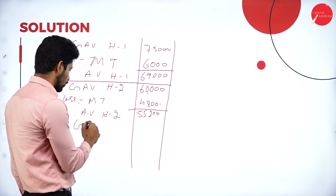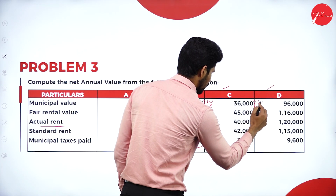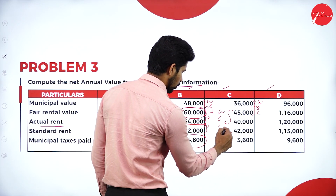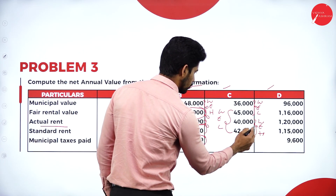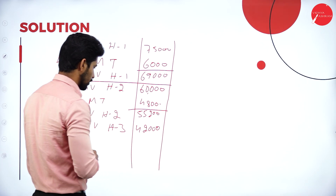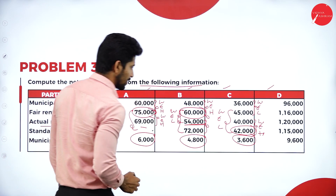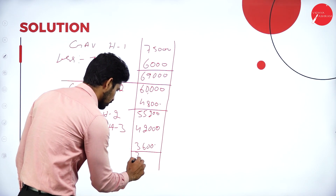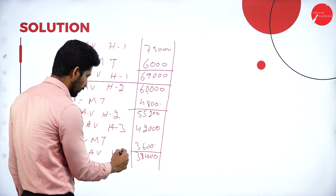For house three: municipal value and fair rent — whichever is high is 45,000. Compare with standard rent of 42,000 — whichever is low is 42,000. Compare with actual rent of 40,000 — whichever is high is 42,000. So gross annual value is 42,000. Less municipal tax of 3,600. Balance is 38,400, which is the annual value of house three.